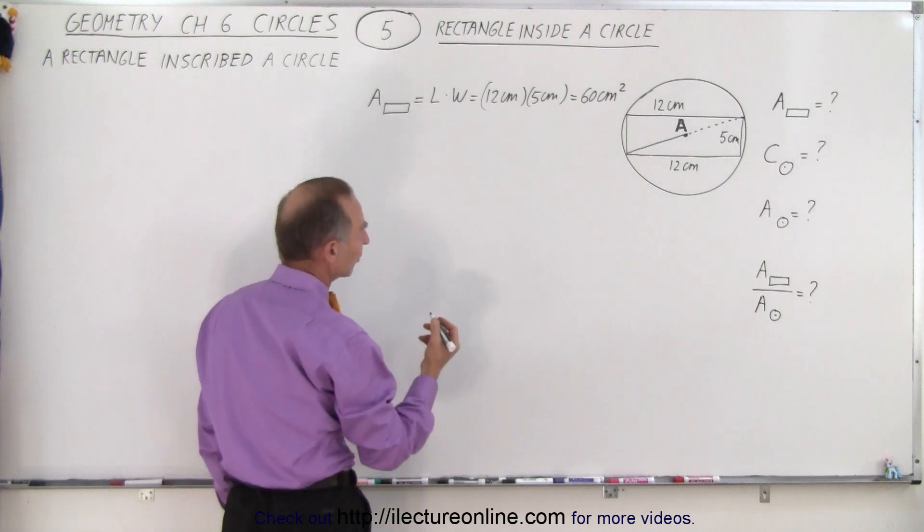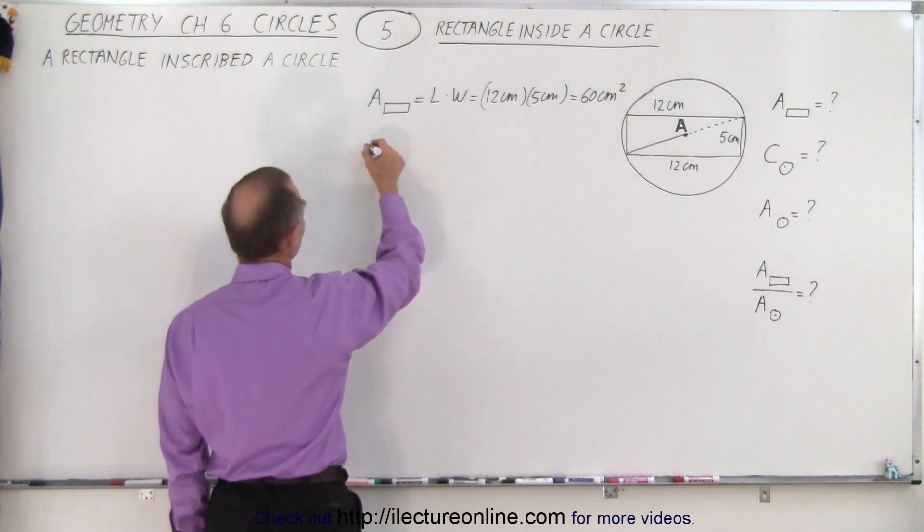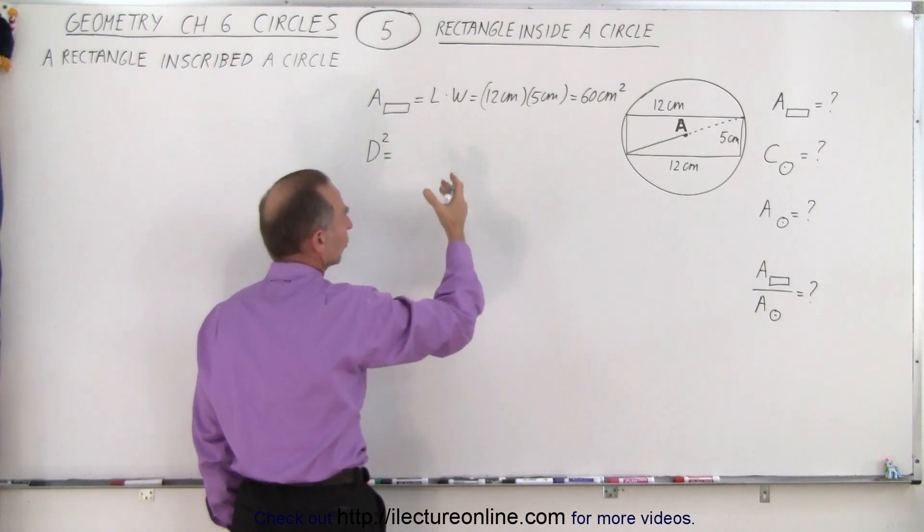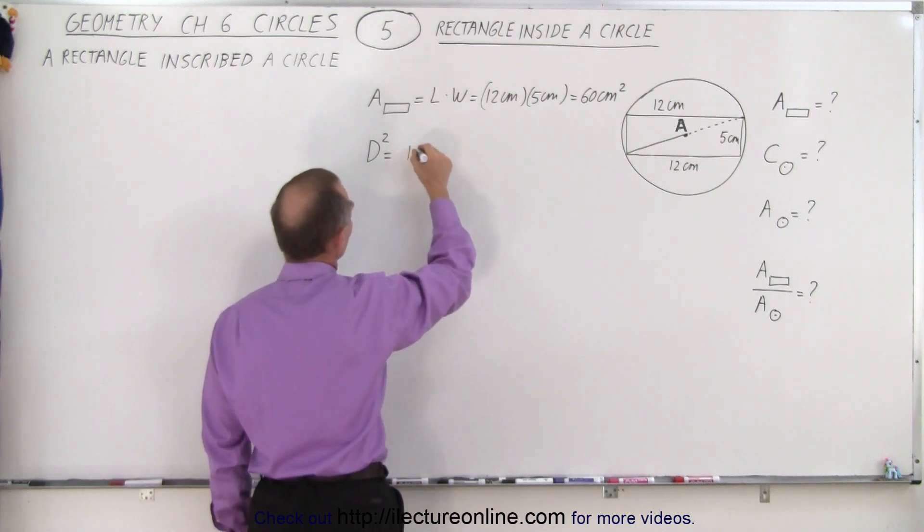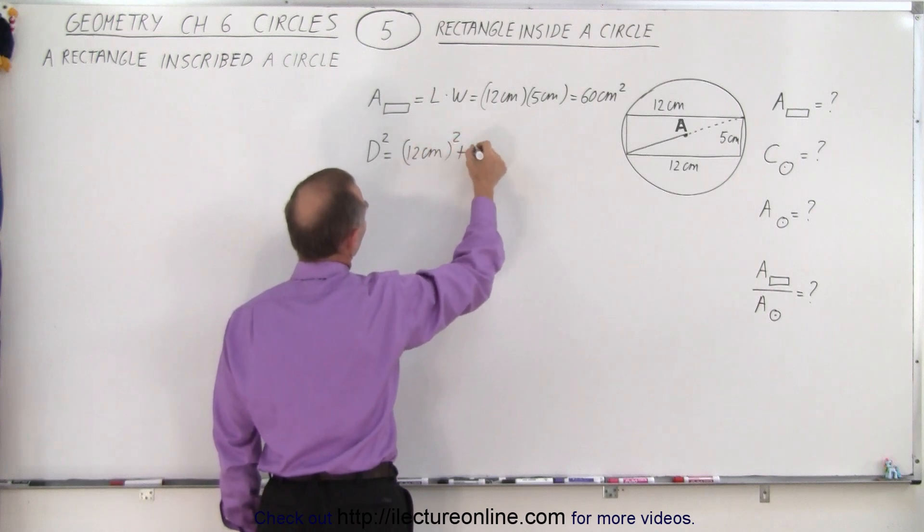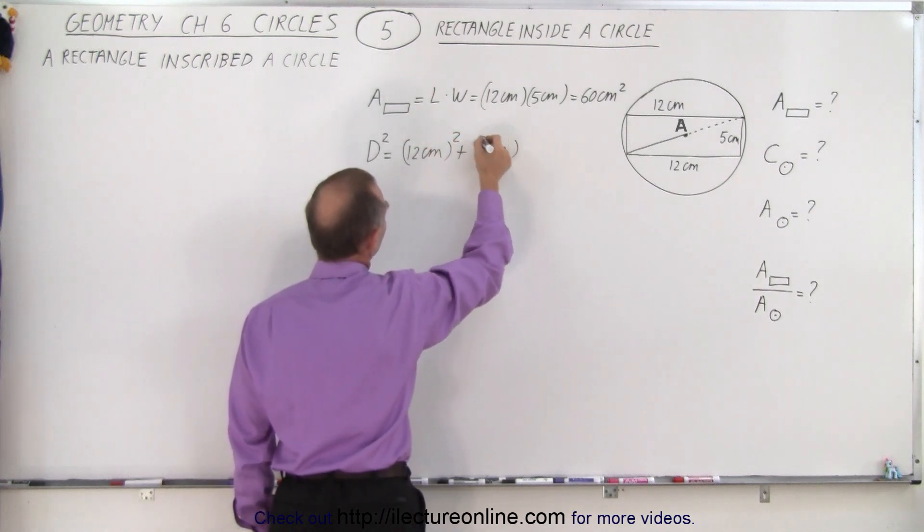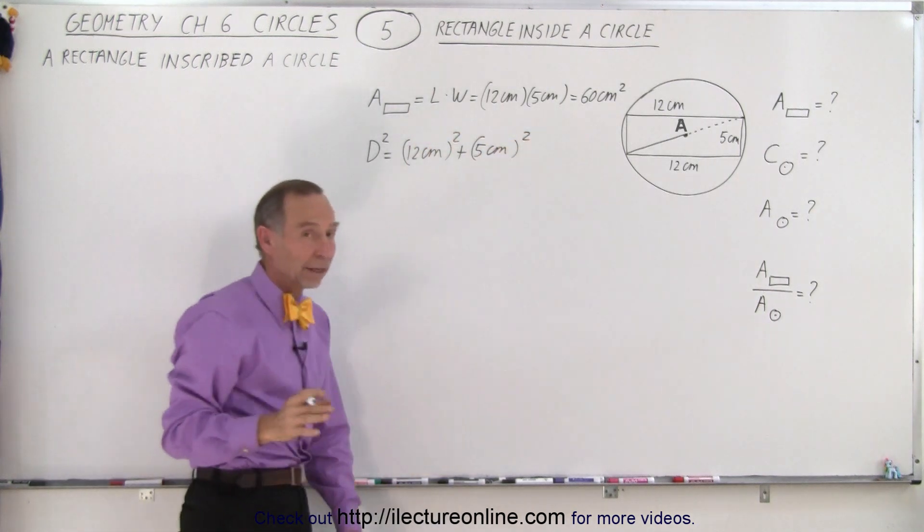So now for the circumference. To find the circumference, we need to find the diameter. So the diameter squared, which is the hypotenuse, is equal to the sum of the squares of the two sides. So it would be 12 centimeters squared plus 5 centimeters squared. So that's using the Pythagorean theorem.